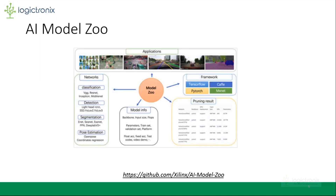Another thing presented with Vitis AI is the AI Model Zoo. It's a collection of already pre-trained models in Caffe and TensorFlow frameworks for different applications like classification, detection, segmentation, and pose estimation. Some of the classification networks include VGG, ResNet, Inception, and for detection, SSD, YOLO V2, V3. Also some segmentation networks like FPN, DPLab, and Isonic. All these models are available at the link shown here, which can be directly downloaded and deployed on the FPGA using Vitis AI.